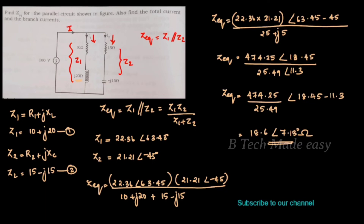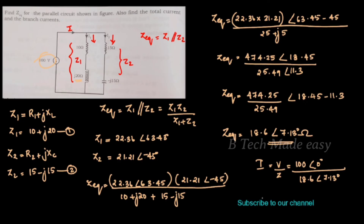Now we find the total current. Total current I equals V divided by Z. The voltage V is 100 angle 0 degrees. So I equals 100 angle 0 degrees divided by 18.6 angle 7.13 degrees, which gives I equals 5.37 angle minus 7.13 degrees.